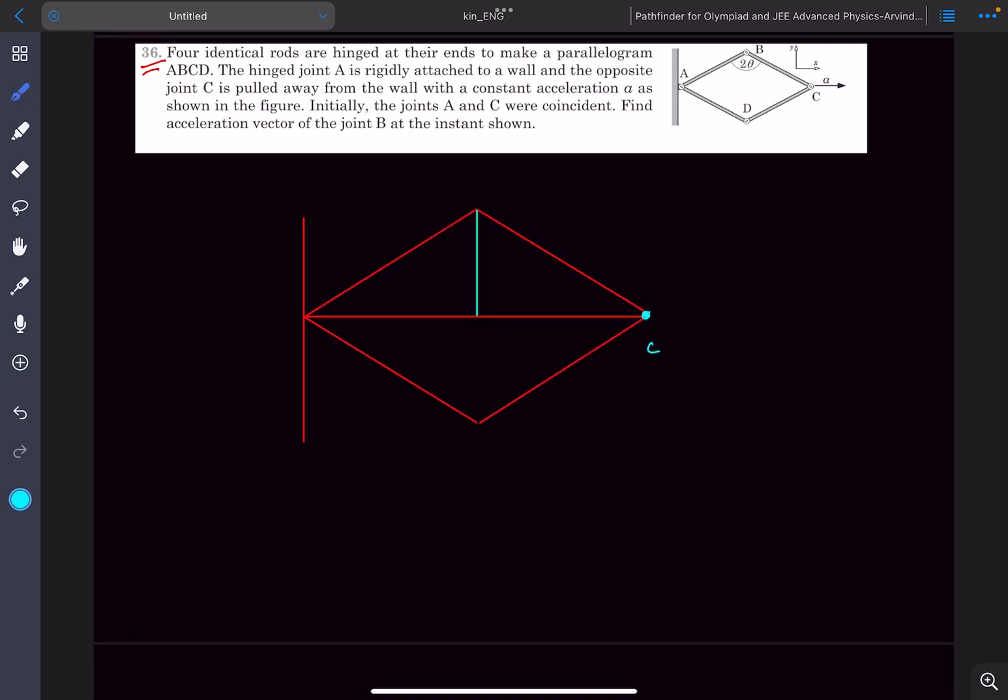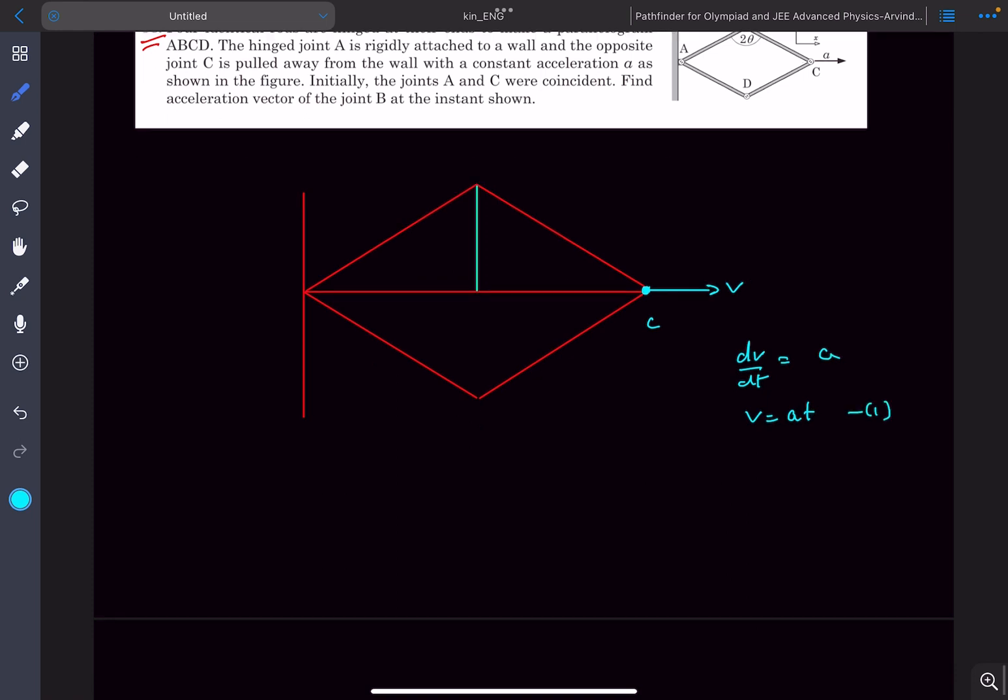This is how the situation looks like. Now let's say the point C has a velocity. The acceleration of the point C is given to be A i cap. So we can write dV by dt to be equal to A, and from here we'll get the value of V to be A multiplied by T. This would be our equation number one.